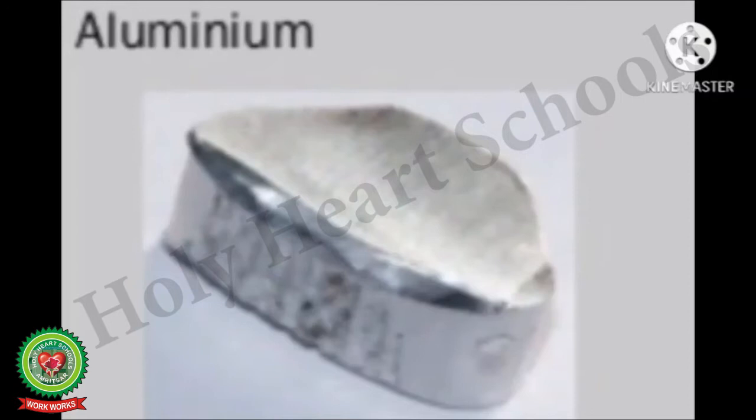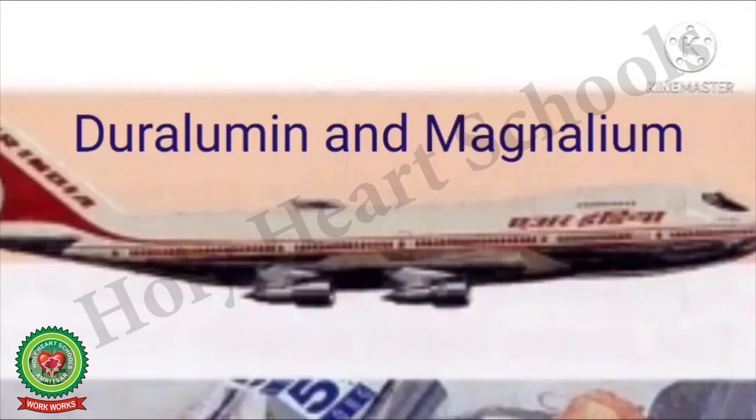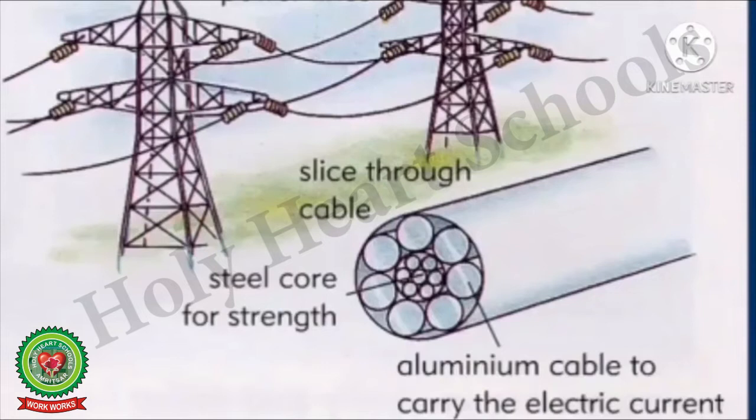Aluminium: Aluminium metal is a very lightweight metal. It has a low density and does not easily corrode. Pure aluminium is weak and soft. That's why some alloys of aluminium like Duralumin and Magnelium are used for making aircraft frames. Aluminium is also a good conductor of electricity, so it is used for making high voltage wires.